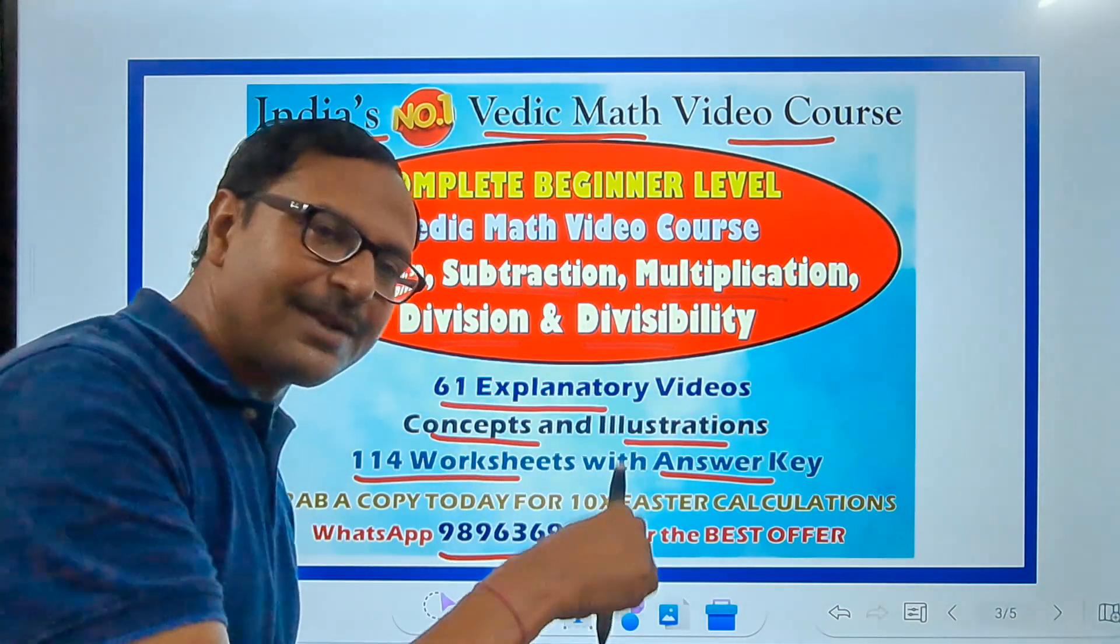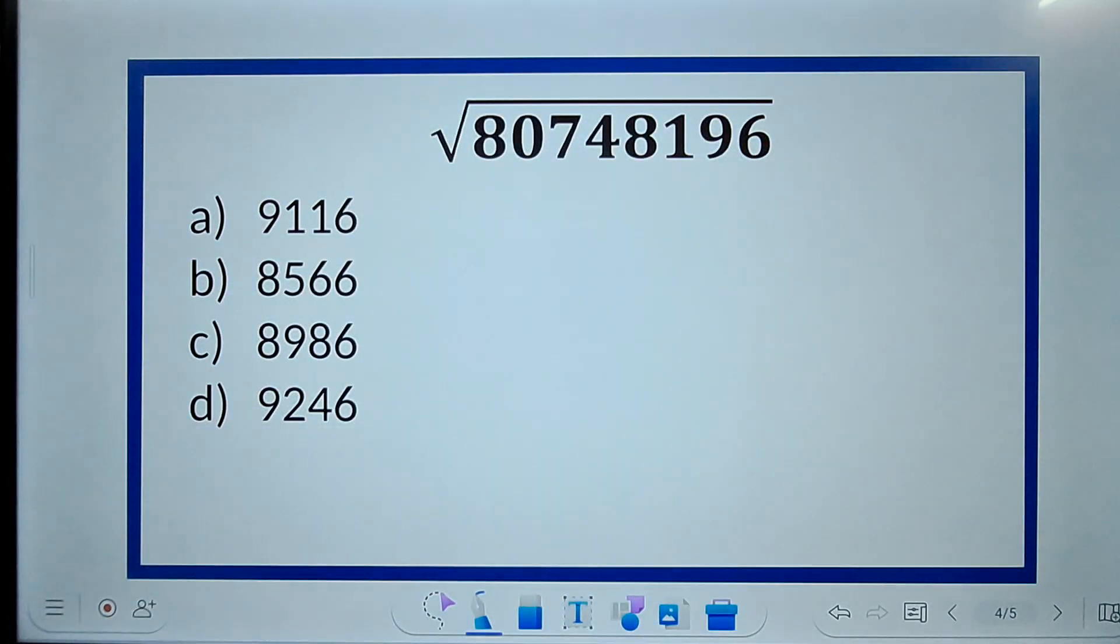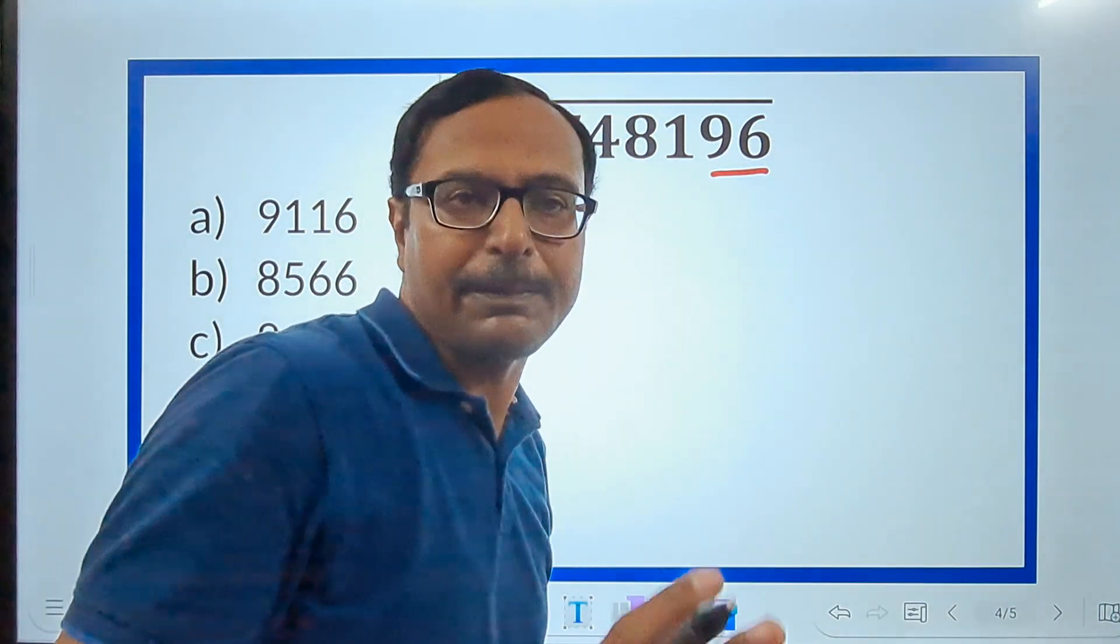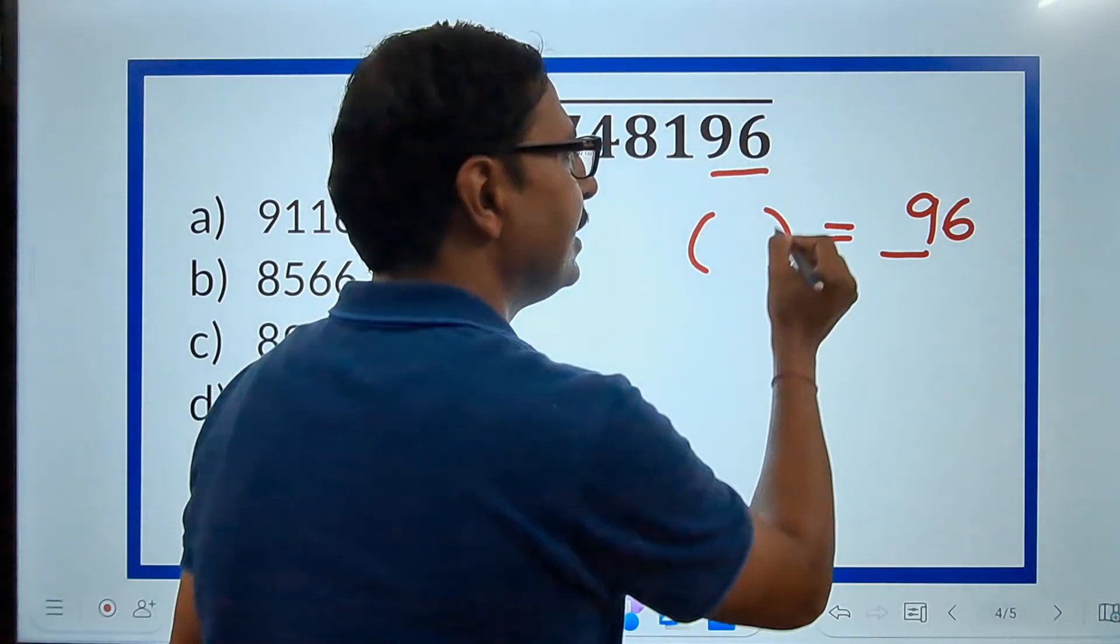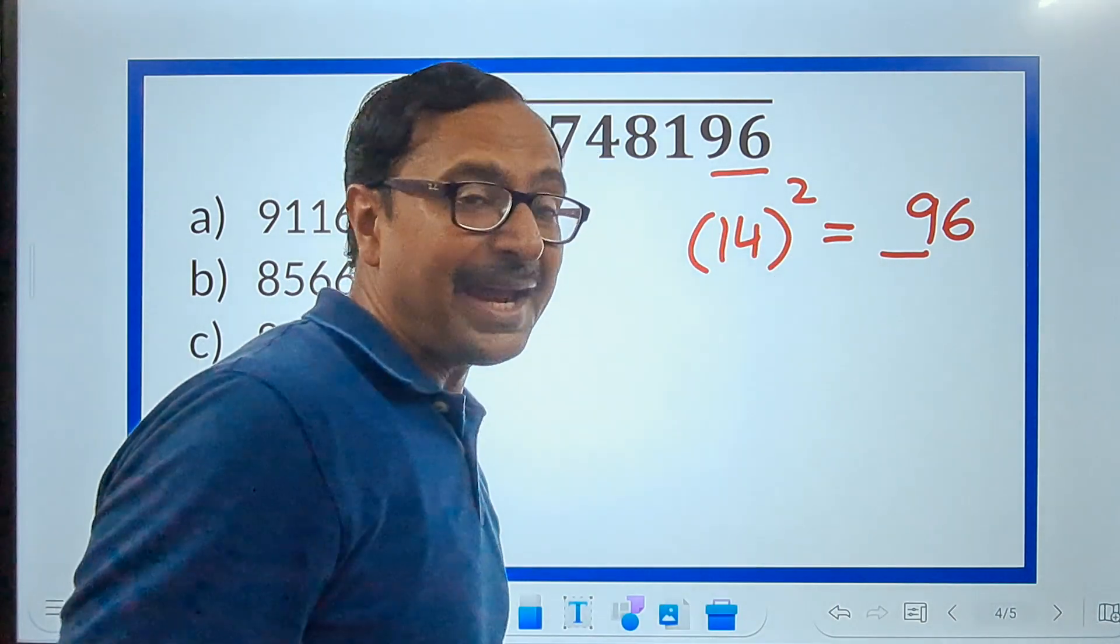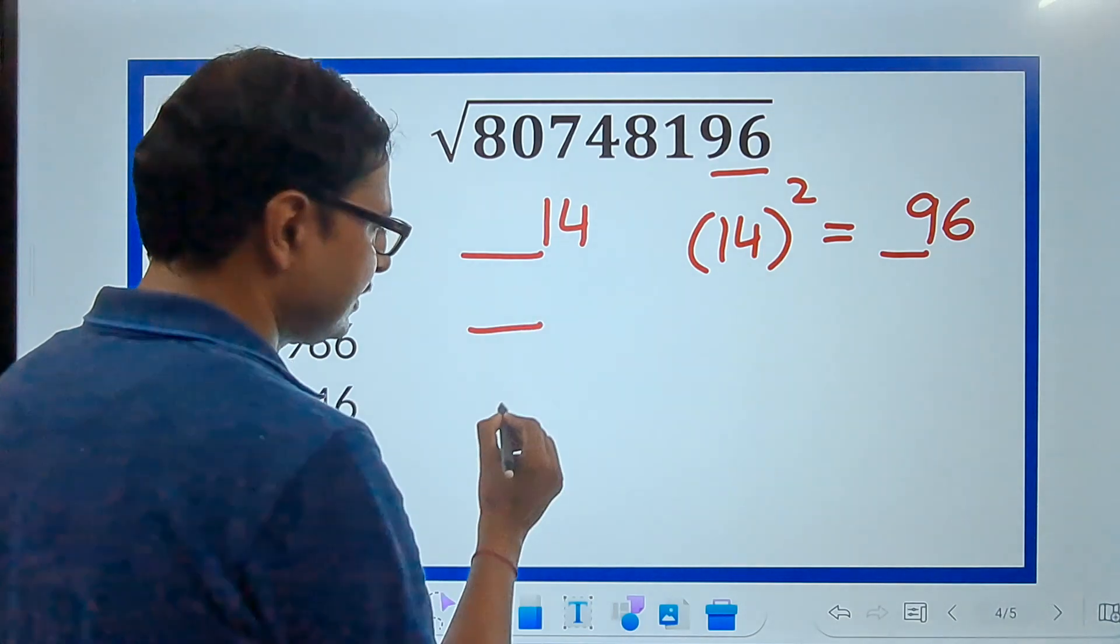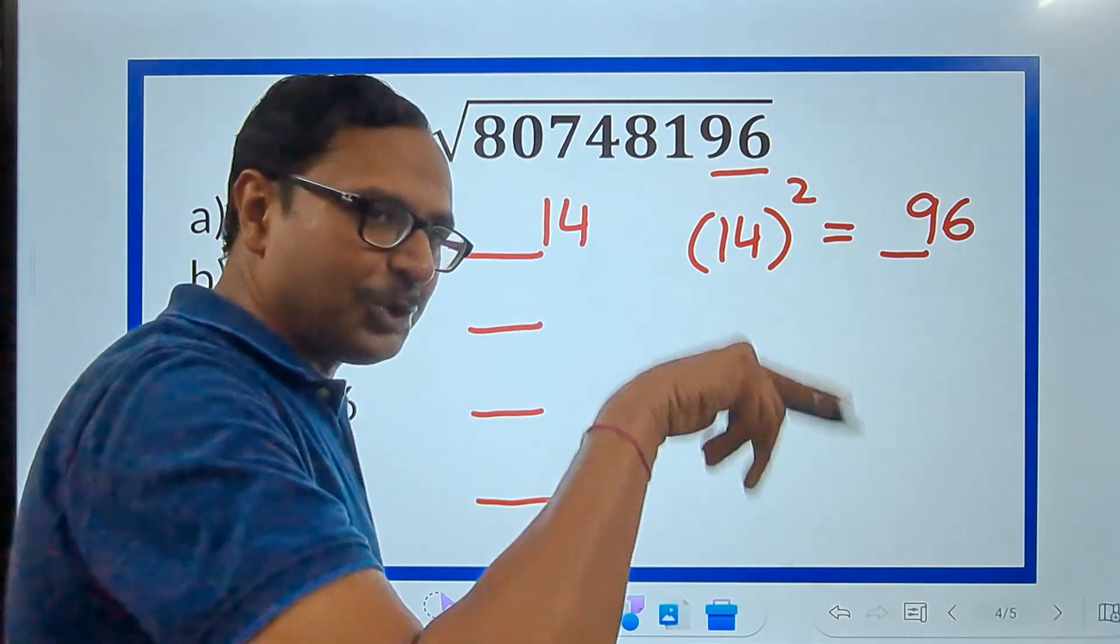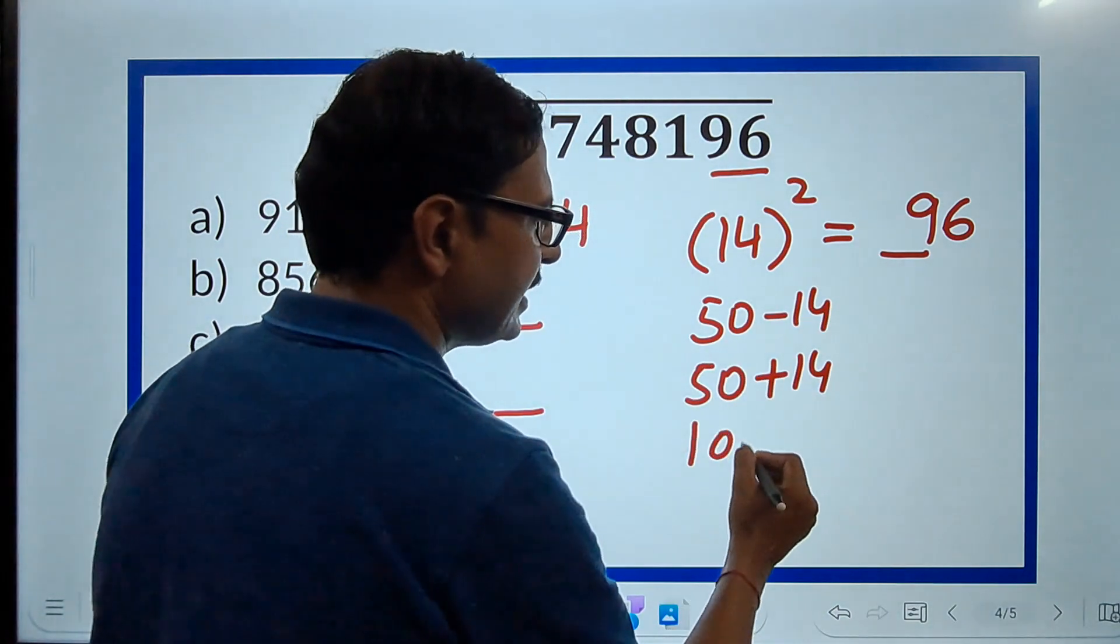Let's take another example. The WhatsApp number is given here in the description box below. Here we have an example where the number 80748196 ends in 96. Now, 96 is not a perfect square. So, I need a number whose square ends in 96. Do you know how 14 square is 196? And therefore, your answer for this question will end in 14 or there are three more possibilities. 50 minus 14, 50 plus 14 and 100 minus 14.